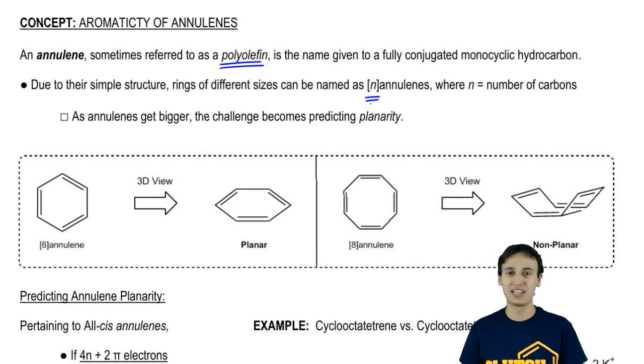If you're walking around campus and you see someone with a Clutch shirt with a benzene, you can say, that's a mighty fine 6-annulene you have there. They're from Clutch, so they'll know what you're talking about and give you a fist bump. Anyway, point being that these annulenes can be summarized by the number of carbons, and as you see, I have two different annulenes here: 6-annulene and 8-annulene.